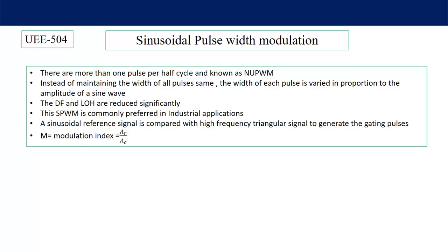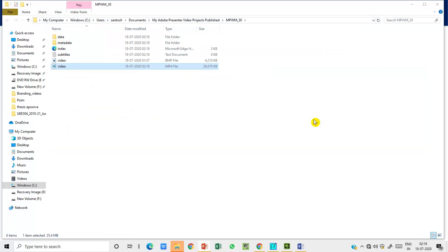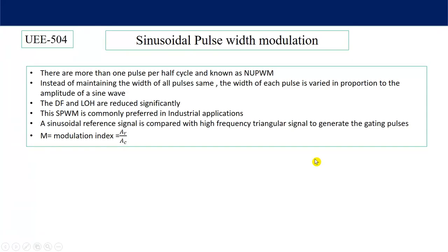Because of the non-uniform pulse width, the distortion factor and lowest order harmonics are reduced significantly. Distortion factor means the remaining harmonic content across the output voltage after filtering — that is reduced. At the same time, the lowest order harmonic, which is the lowest harmonic order having magnitude close to 3% of the fundamental component, is also reduced.